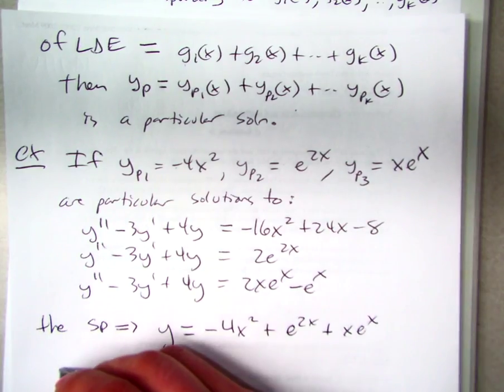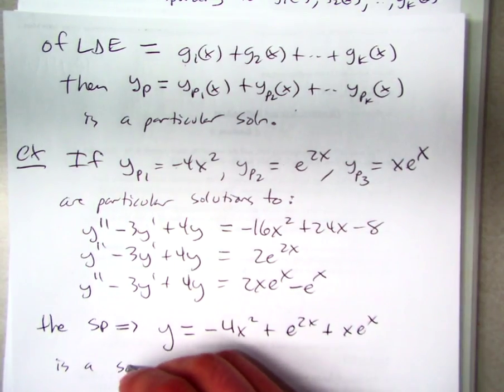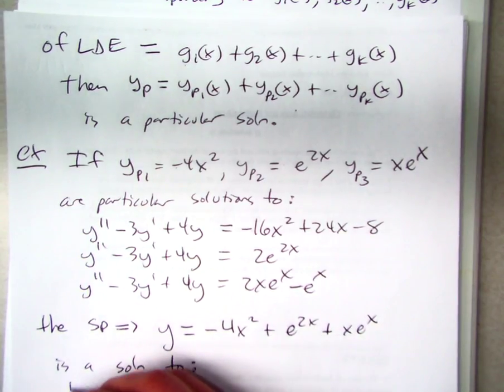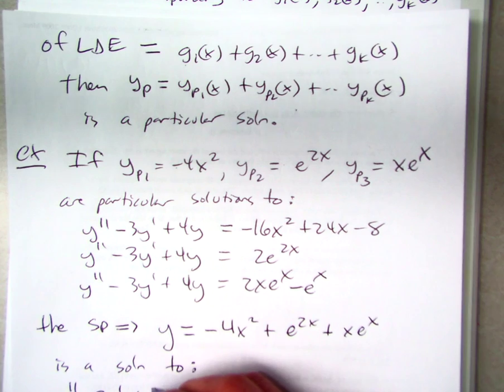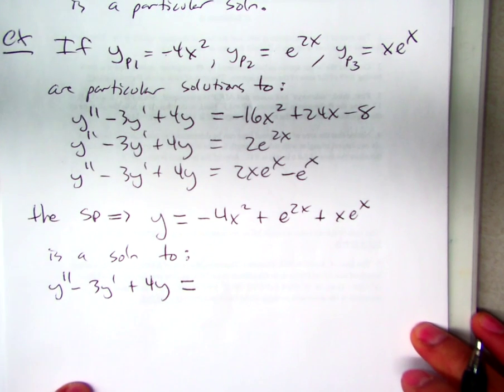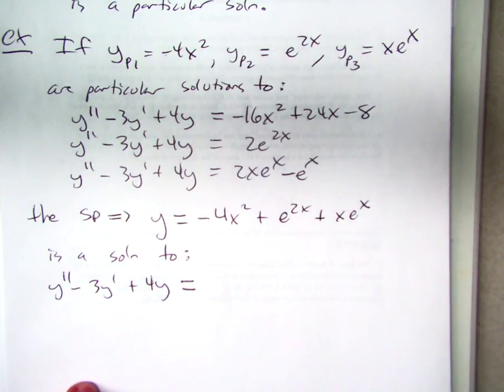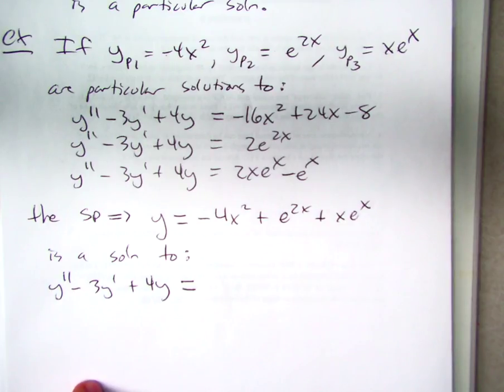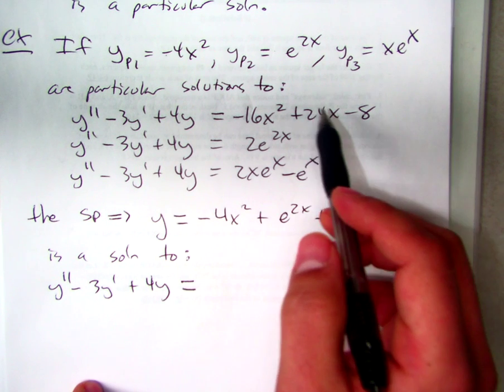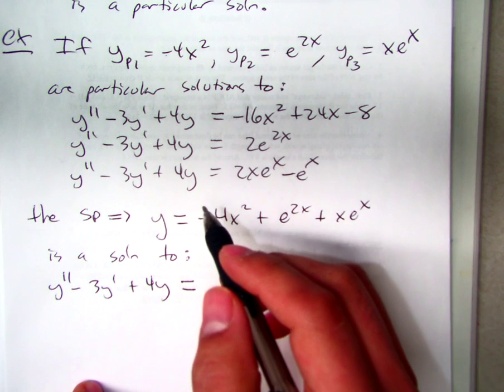And that will be a solution to Y double prime minus 3Y prime plus 4Y equal to what? Not going to equal zero. Add them all up, yeah.